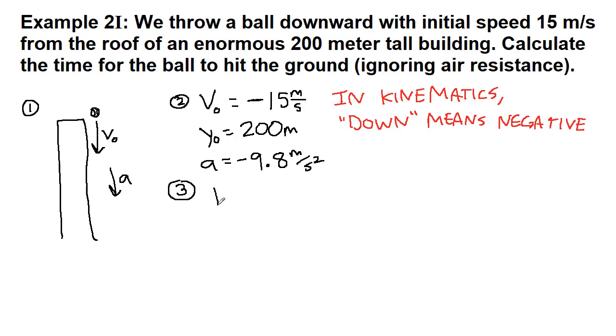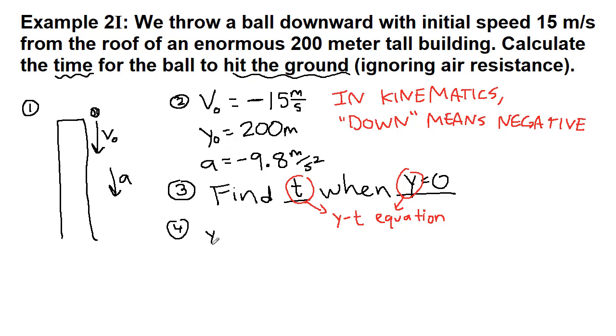All right, step three, rephrasing the question, we want to find blank when blank. We're calculating the time, we're finding t for the ball to hit the ground when y equals 0. Okay, so that's t and y, so we use the yt equation. We've been using this one a bunch lately, mostly because it comes up very often, but also because it's the one that we need the most practice with. All right, step four is to write down the equation.